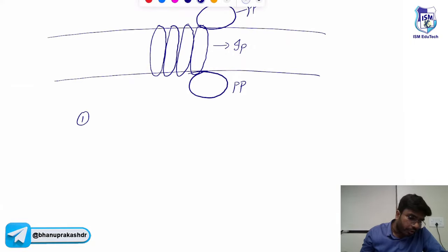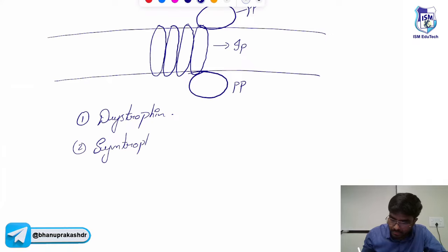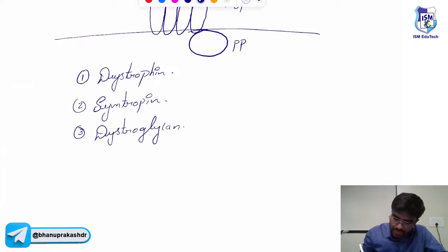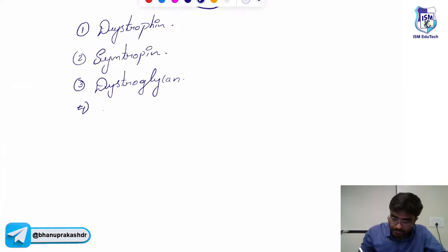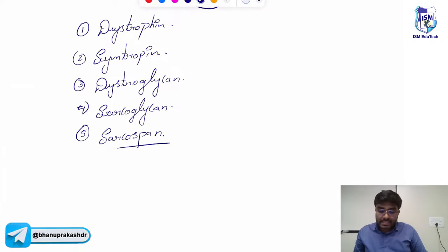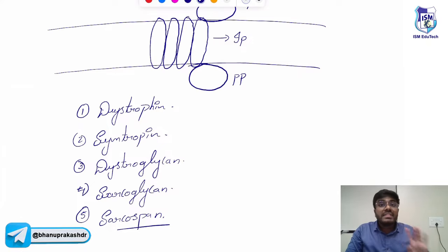The proteins present in the sarcolemma are: dystrophin, syntrophin, dystroglycan, sarcoglycan, and sarcospan. These five proteins are present in the muscle cell membrane. Which of them are integral proteins and which are peripheral proteins — I will show you.